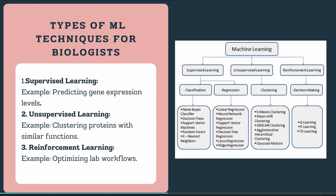Finally, reinforcement learning, or RL, is a type of ML where an agent learns by interacting with its environment and receiving feedback. In the context of molecular biology, we could use reinforcement learning to optimize lab workflows, such as determining the most efficient experimental setup.